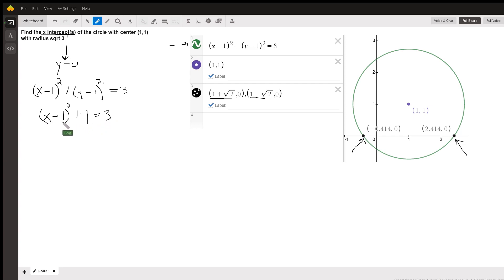Now, we could square this binomial, collect all the terms on the left side equal to 0, and solve by factoring or the quadratic formula. But the way this equation is written right now, the easiest thing to do is to isolate this binomial squared by subtracting 1 from both sides.